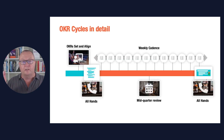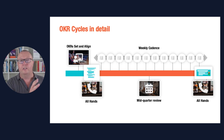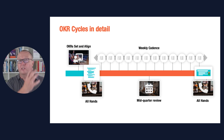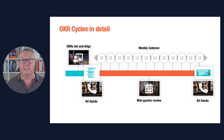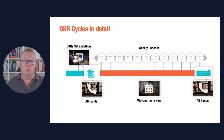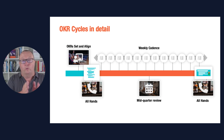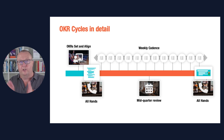At the start of the quarter, you have OKRs set and aligned. You're doing some work to set the OKRs, doing the aligning, starting the planning process, reviewing that with each other, making sure the objectives and key results are set and aligned with your strategy and with each other. You've got the plans in place. You kick off with an all hands, which we'll be talking about in this video. Through the quarter, you have the weekly execution cadence — we've already talked about that.